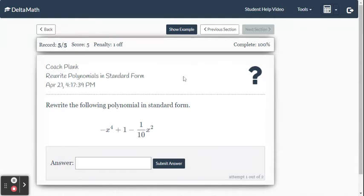This video is on rewriting polynomials in standard form within the Delta Math online system. To rewrite a polynomial in standard form, you just need to go from the highest degree term to the lowest degree term.